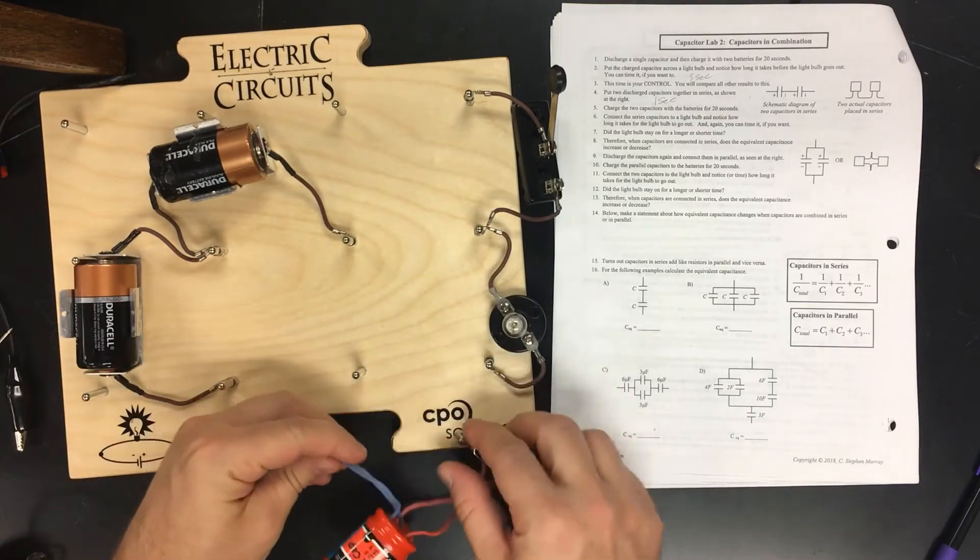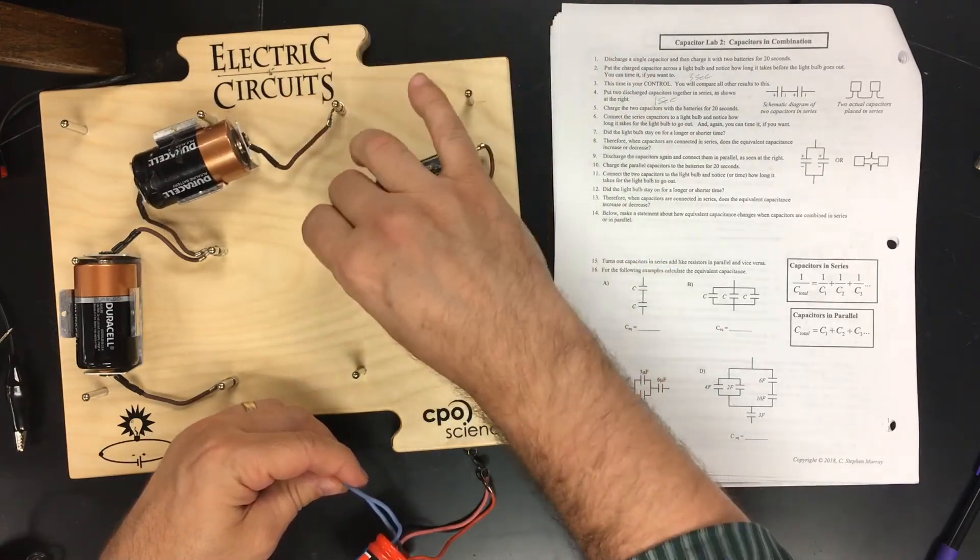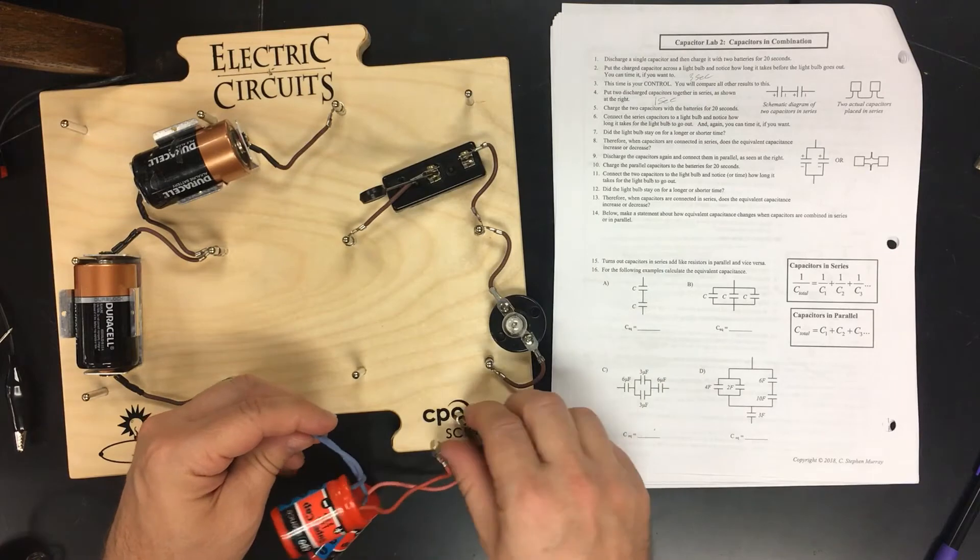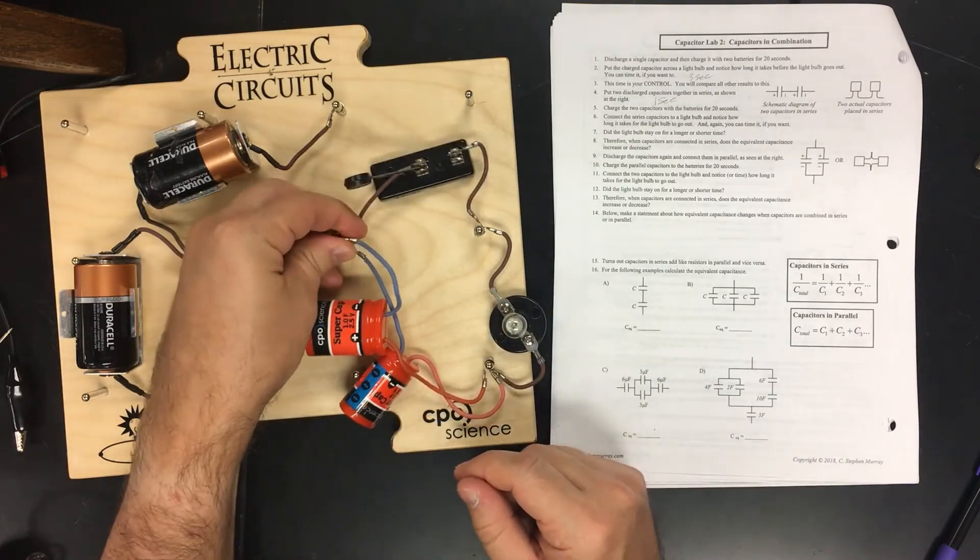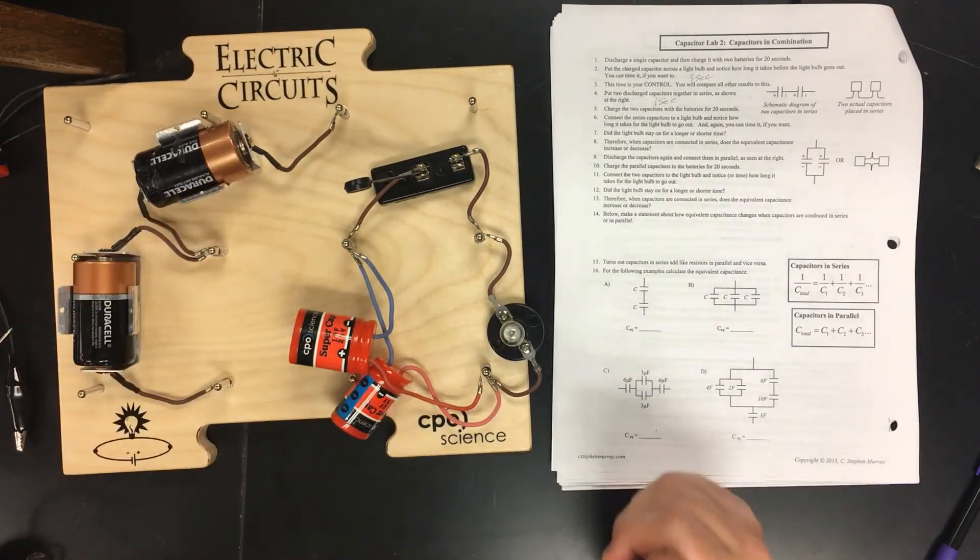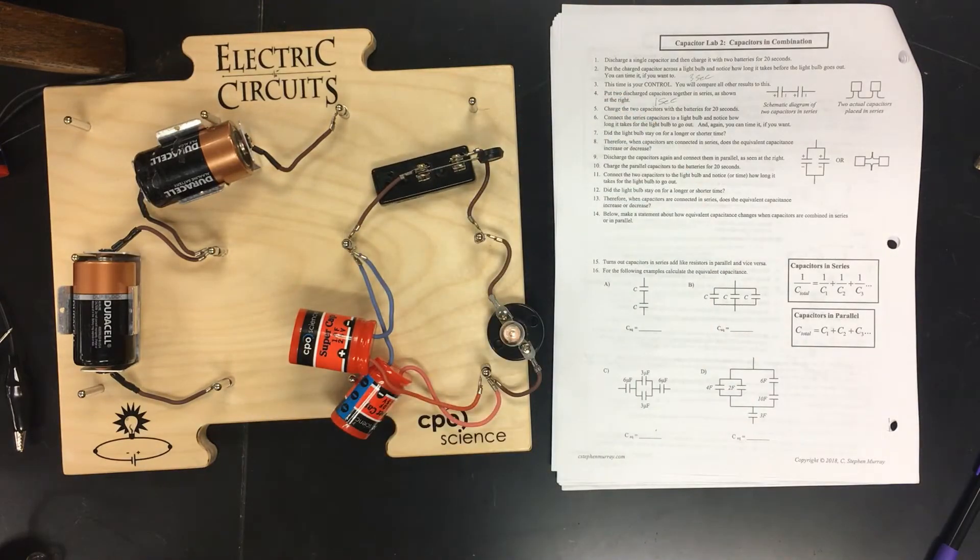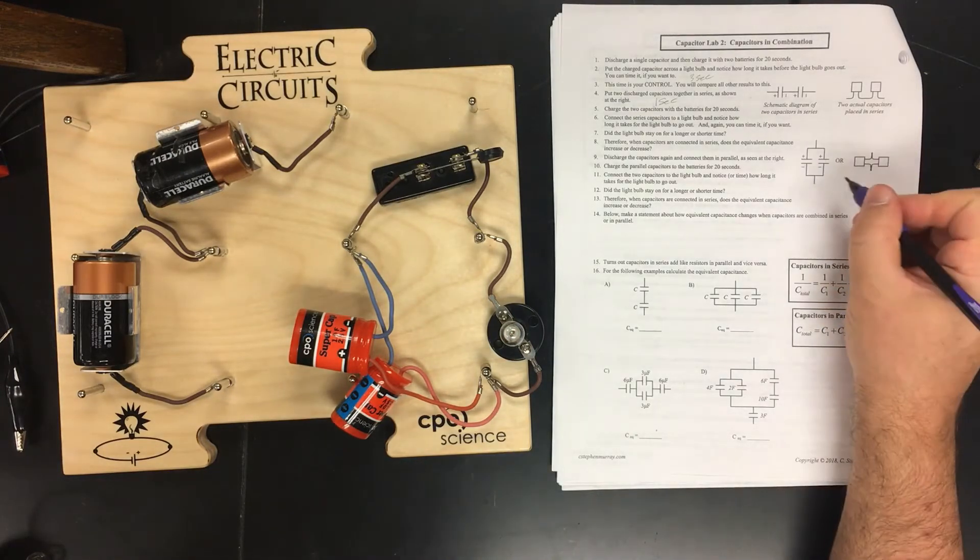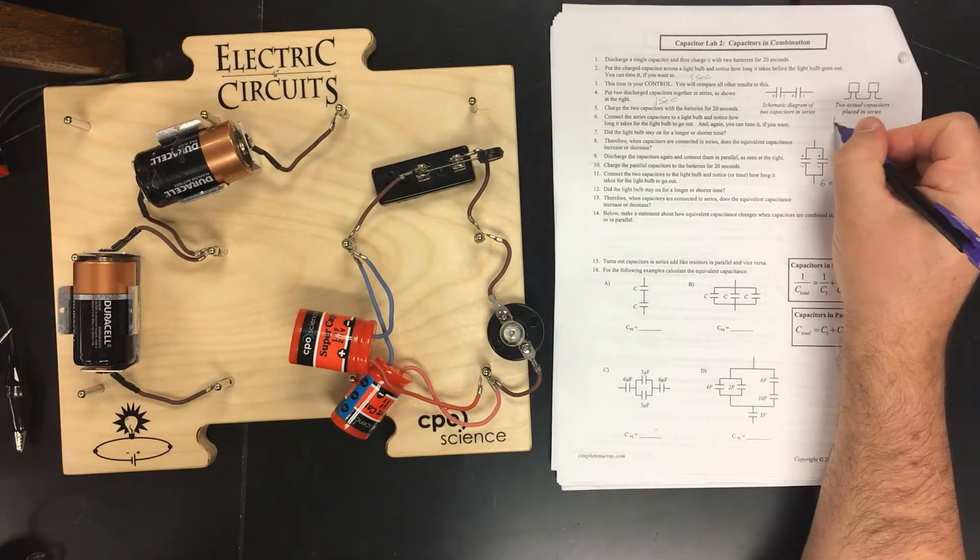All right, so now I'm going to try to put this here so that I don't have anything connected until I throw that switch. So it was three seconds when it was just one. One second or so when it was in series. Here we go. In parallel: 1, 2, 3, 4, 5, 6, 7. So six or seven seconds. And this was like one second.